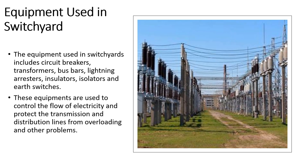The equipment used in switchyards includes circuit breakers, transformers, bus bars, lightning arresters, insulators, isolators, and earth switches. These equipments are used to control the flow of electricity and protect the transmission and distribution lines from overloading and other problems.